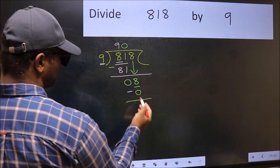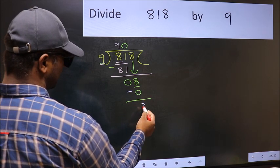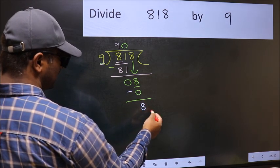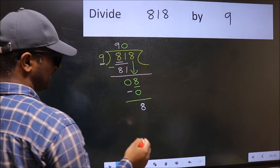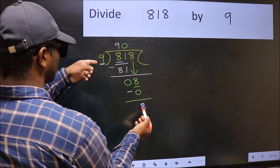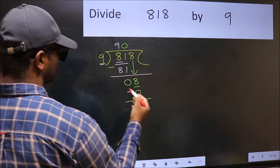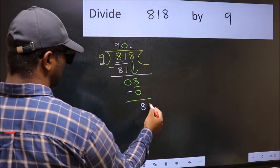Now you should subtract. 8 minus 0, 8. Over here, we did not bring any number down. And 8 is smaller than 9. So now you can put dot and take 0.